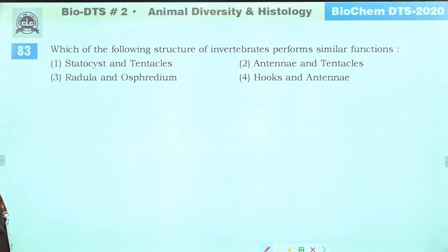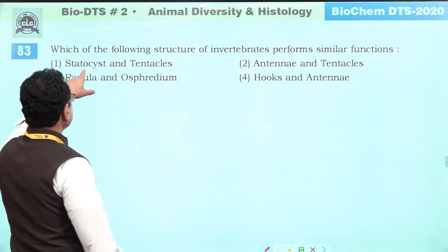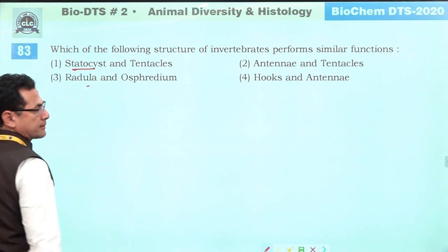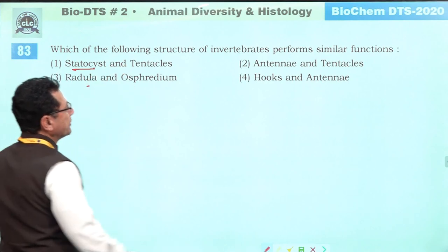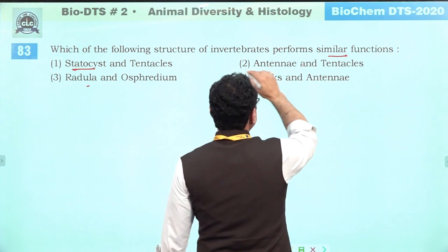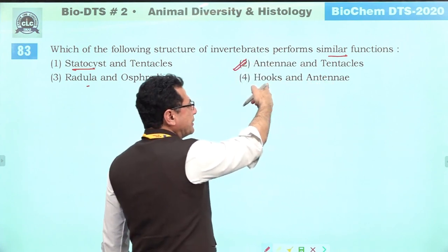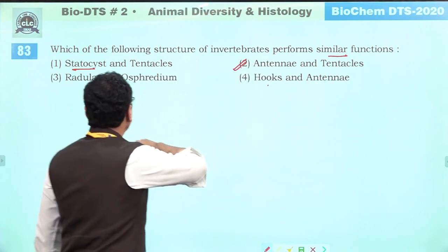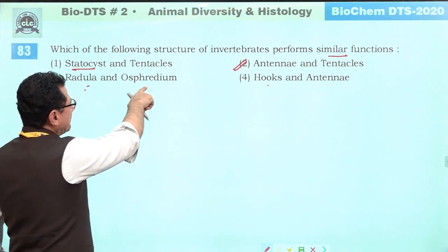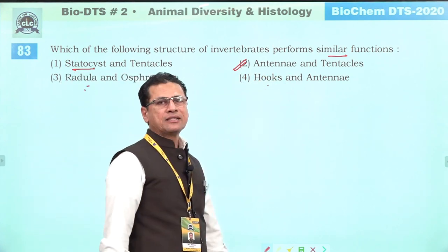Which structures of invertebrates perform similar functions? Statocysts are for balancing. Tentacles are for touch. The question asks for similar-function structures. Antennae and tentacles — both are for touch/sensing. So answer is two. Hooks and antennae — not similar function. Radula is for crushing food. Osphradium is a chemosensory organ — similar function to antennae or tentacles. Answer is two: antennae and tentacles.